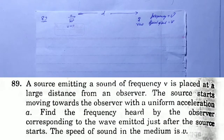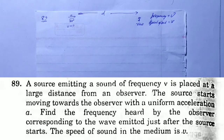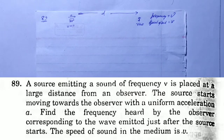SC Wimmer Solution Chapter 16, Sound Wave, Question 89. A source emitting a sound of frequency ν is placed at a large distance from the observer. The source starts moving toward the observer with a uniform acceleration A. Find the frequency heard by the observer corresponding to the wave emitted just after the source starts. The speed of sound in the medium is V.